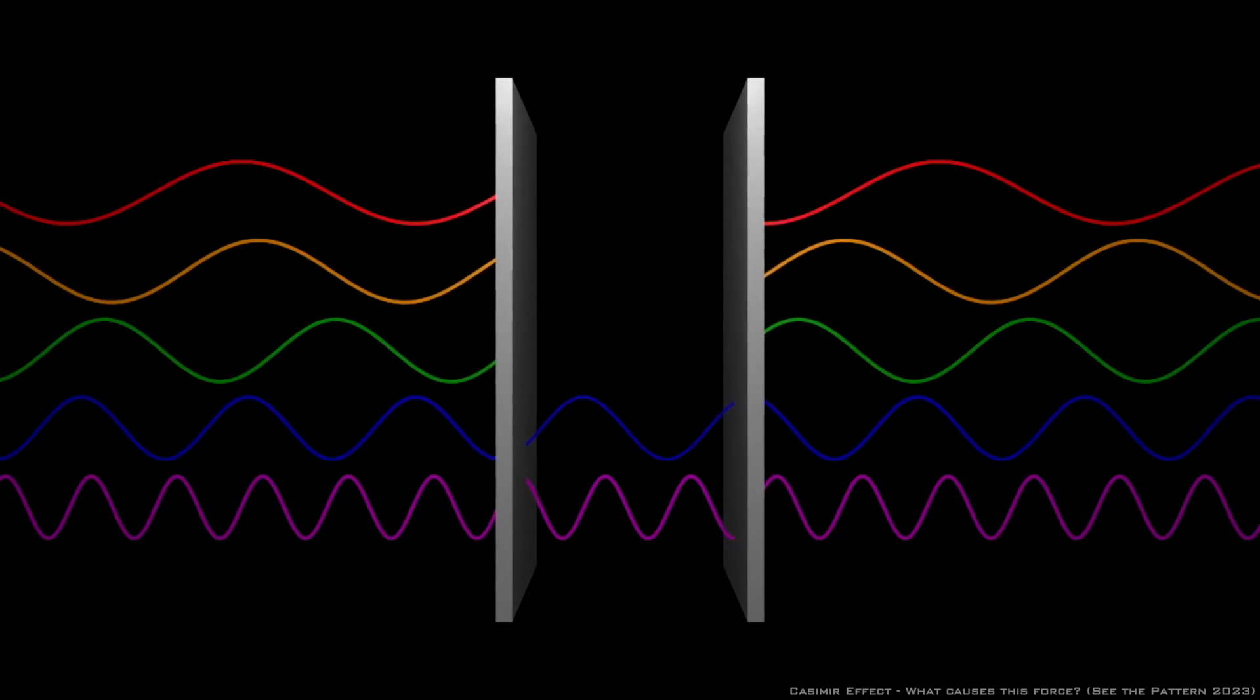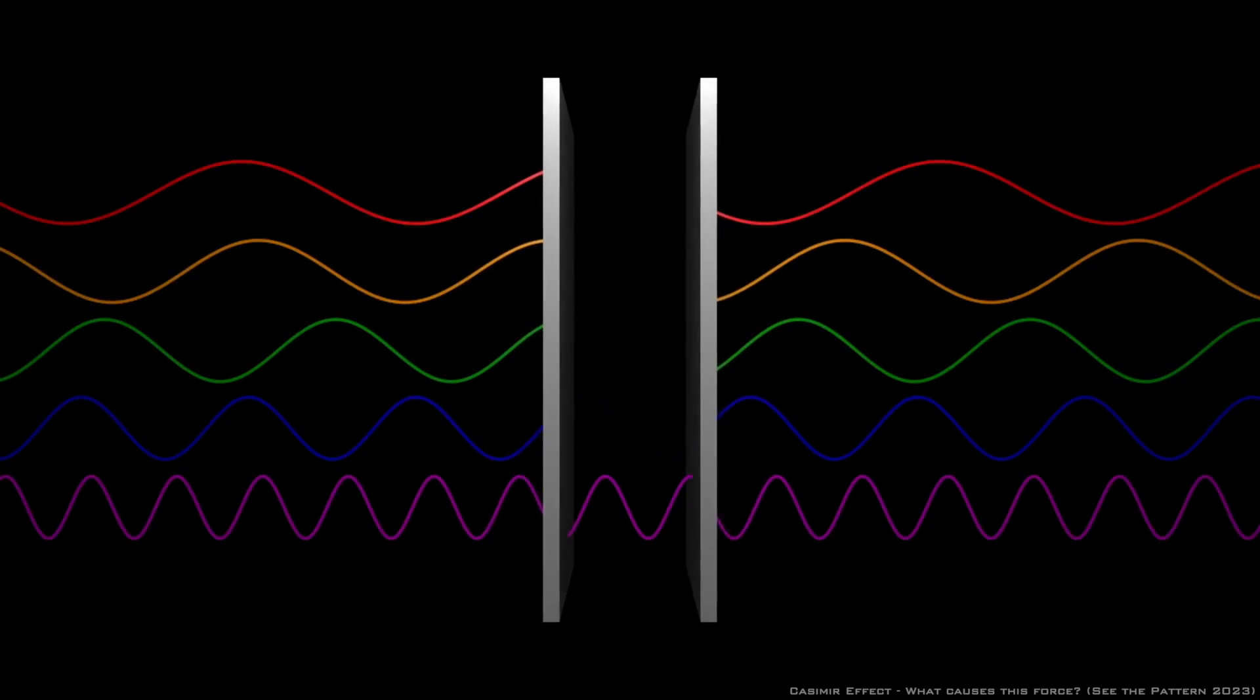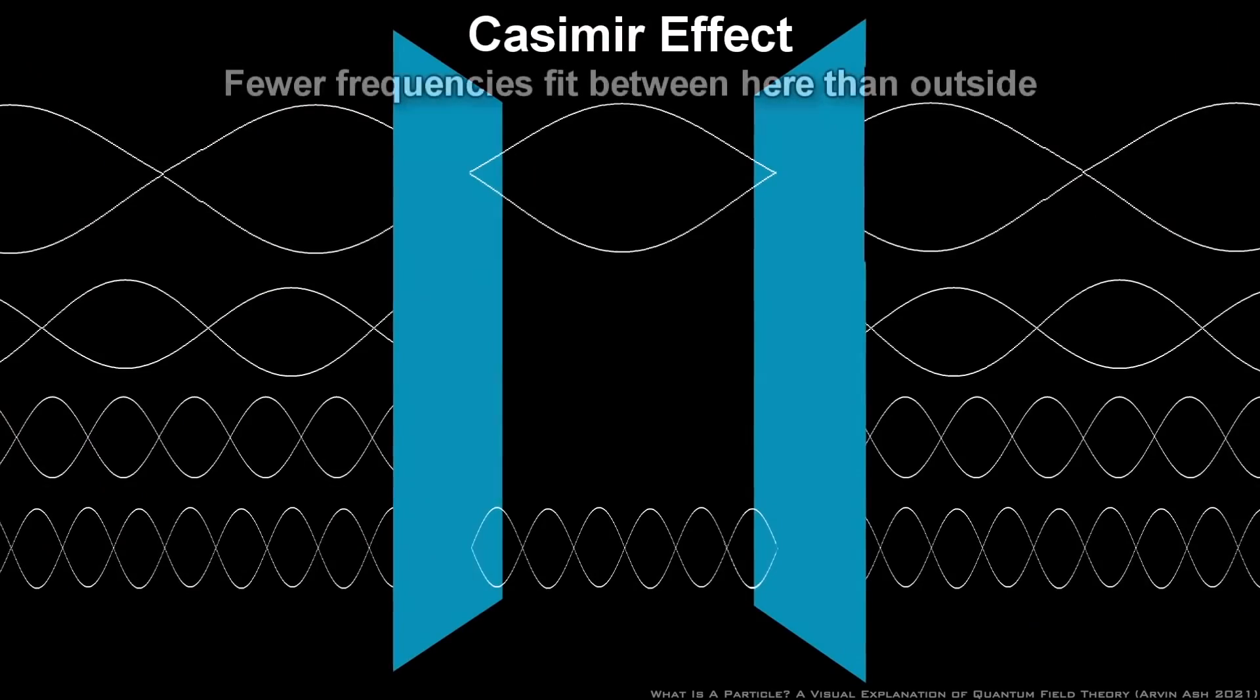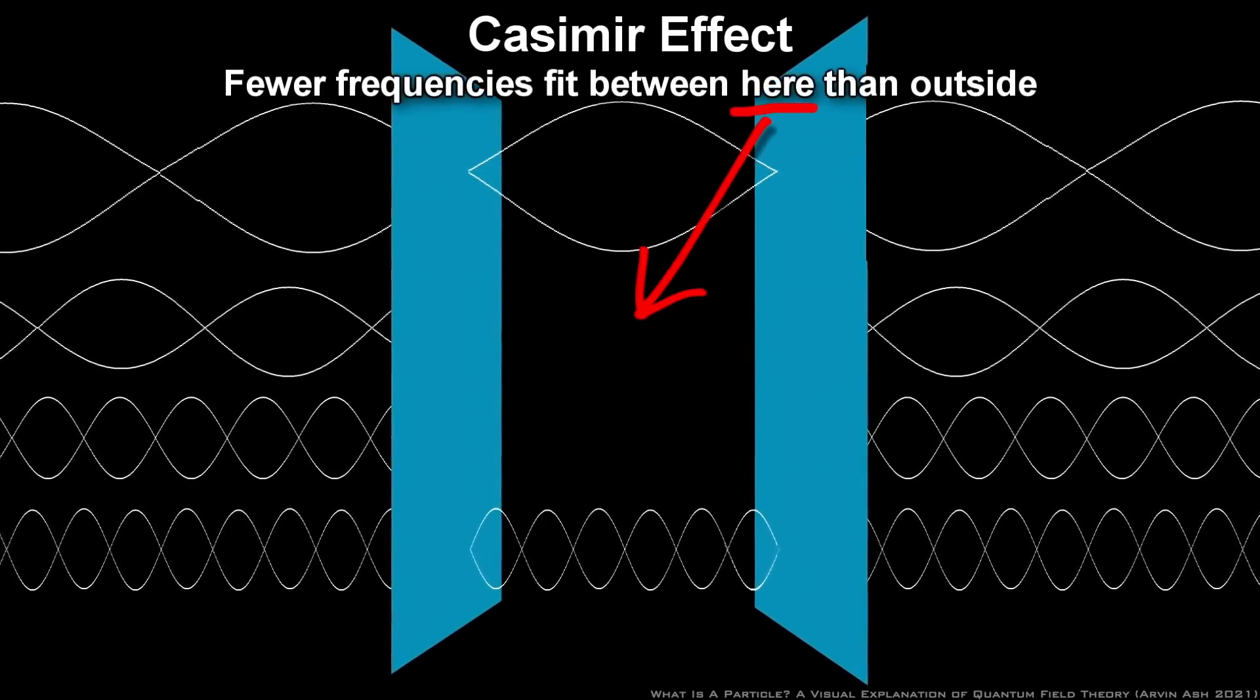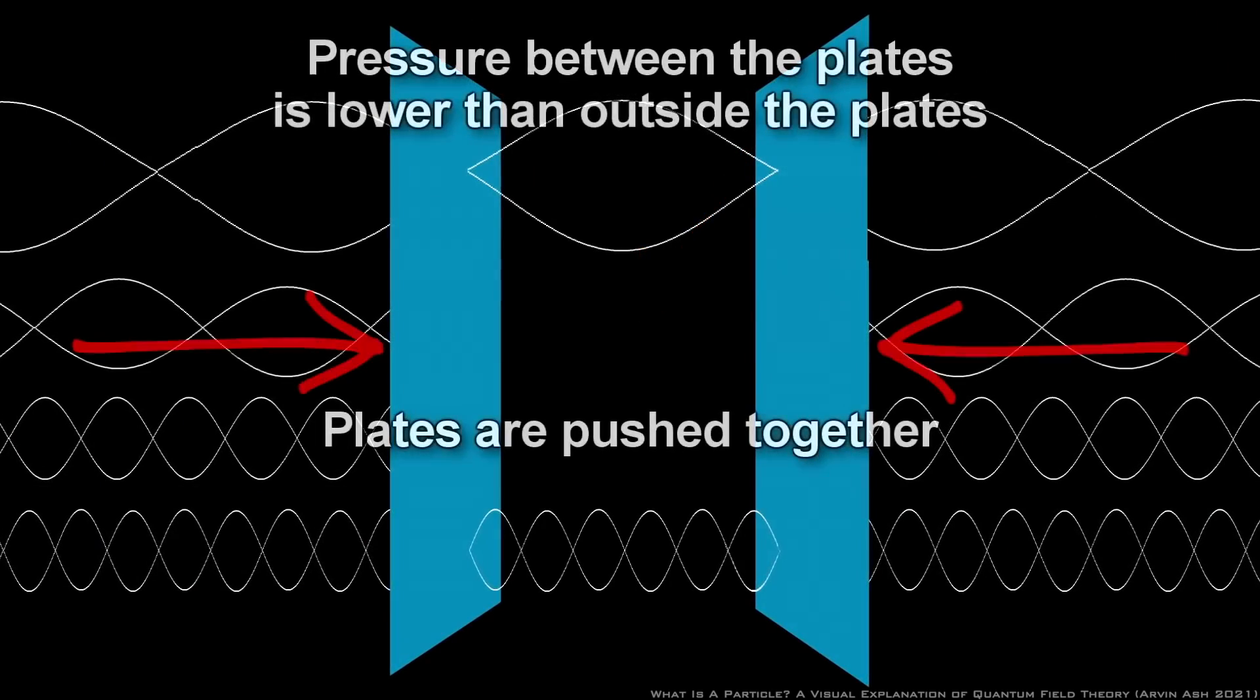Virtual particles with longer wavelengths remain outside the plates and contribute to the vacuum pressure there. Between the plates, however, longer wavelengths are excluded, leading to a higher density of virtual particles with shorter wavelengths.